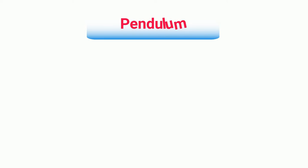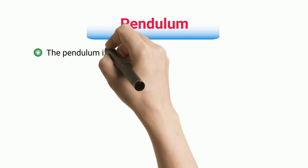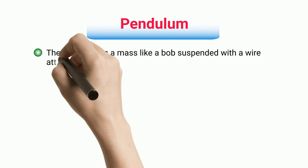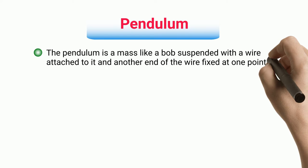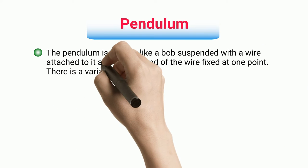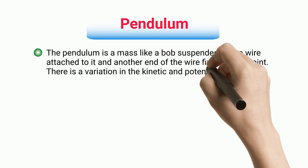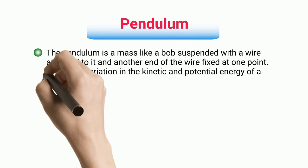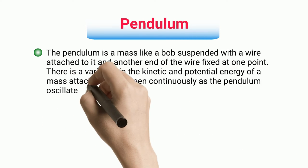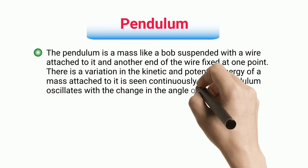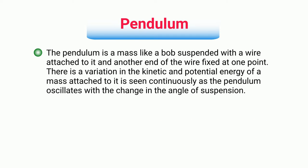Pendulum. The pendulum is a mass like a bob suspended with a wire attached to it and another end of the wire fixed at one point. There is a variation in the kinetic and potential energy of a mass attached to it, seen continuously as the pendulum oscillates with the change in the angle of suspension.